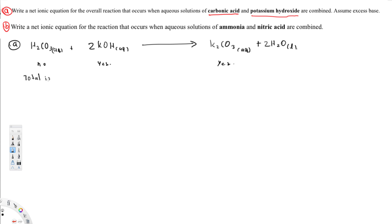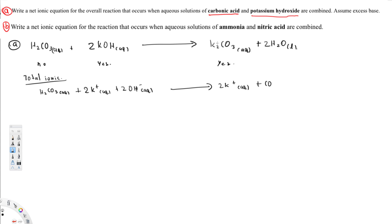Let's write the total ionic equation. H₂CO₃ remains aqueous on the left side. We have 2K⁺ aqueous plus 2OH⁻ aqueous. On the right side we are going to have 2K⁺ aqueous plus CO₃²⁻ aqueous and then 2H₂O liquid.